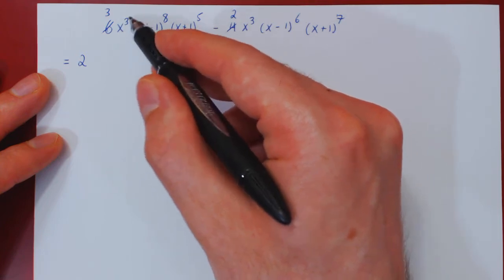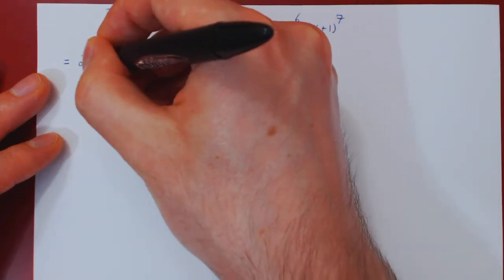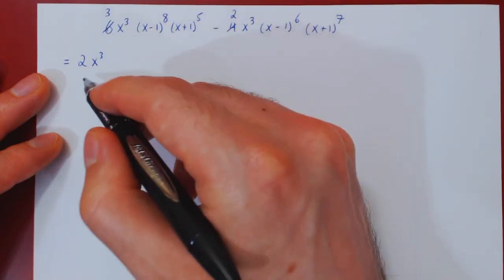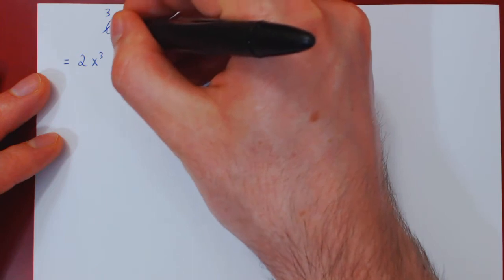Then, well, there's an obvious factor of x cubed in both terms, so we can factor x cubed out. So if you take away x cubed in both cases from x cubed, you're left with nothing in this case.